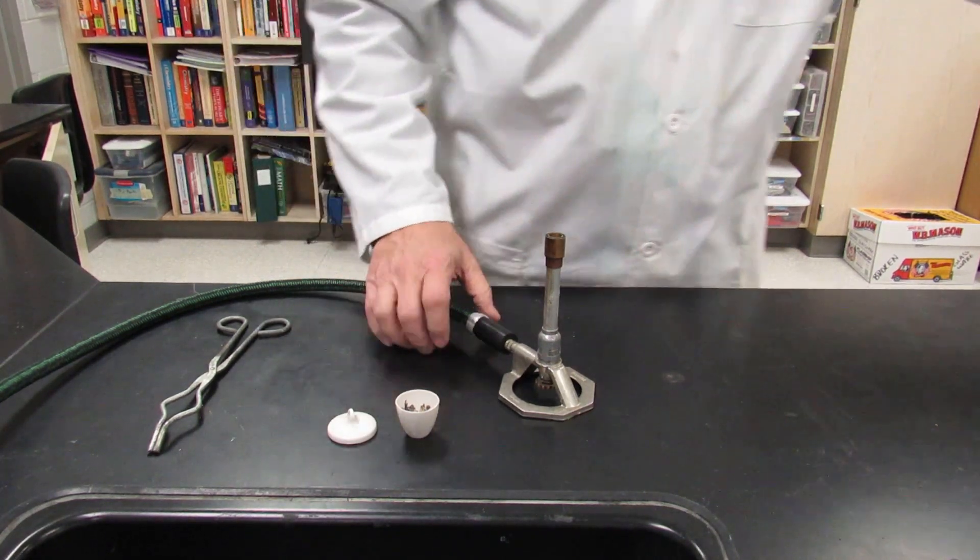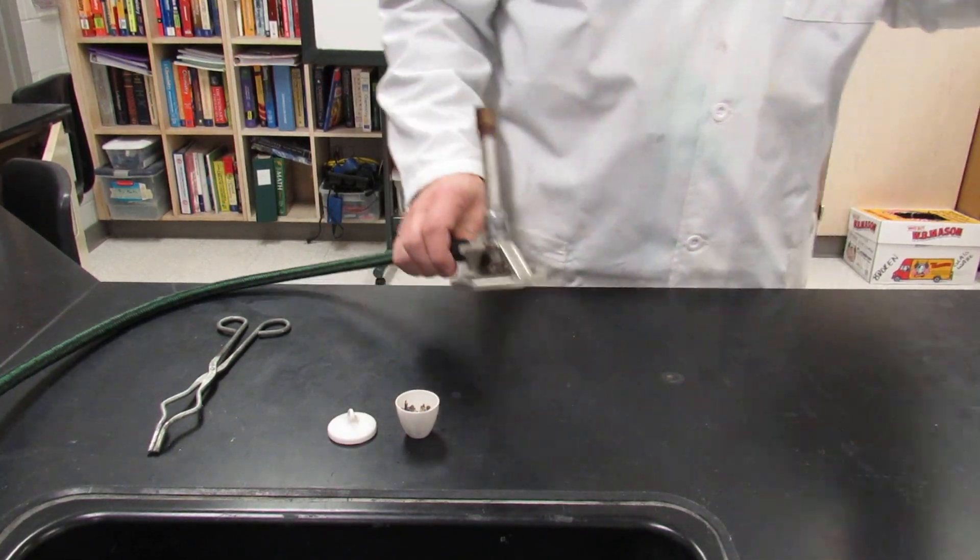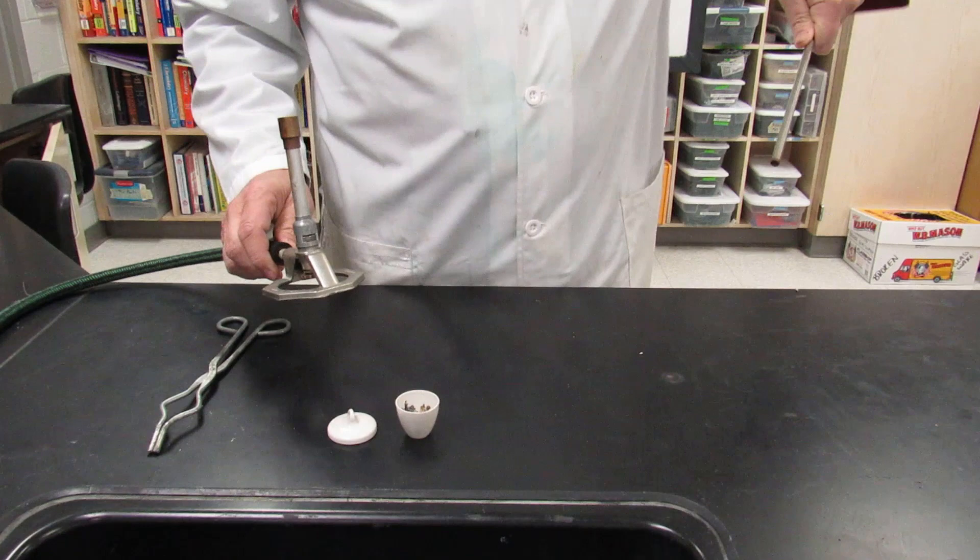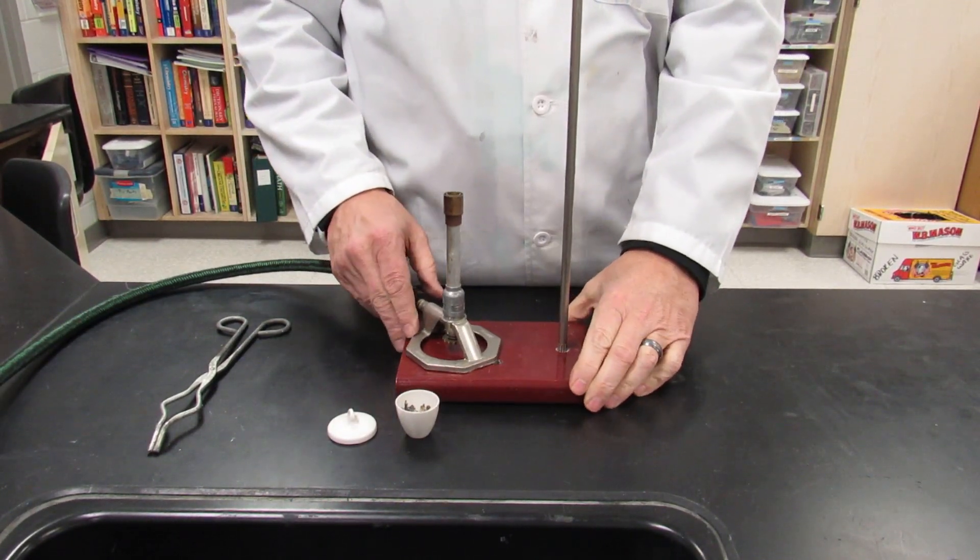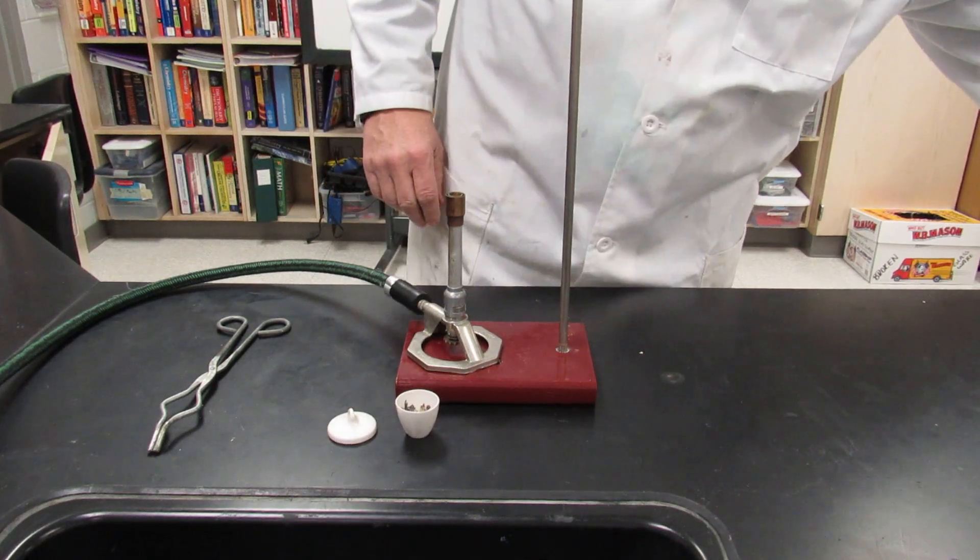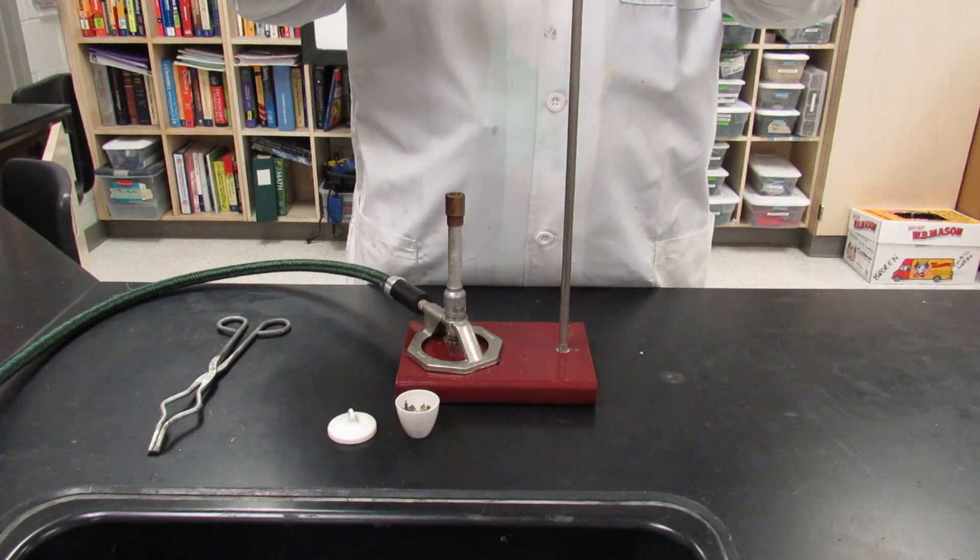Here's the setup. You're going to take your ring stand, set your Bunsen burner on your ring stand, attach your iron ring.